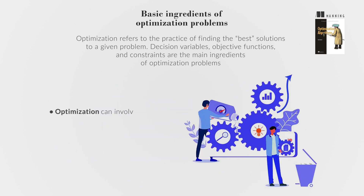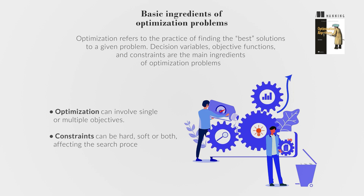Optimization can involve single or multiple objectives. Constraints can be hard, soft, or both, affecting the search process.